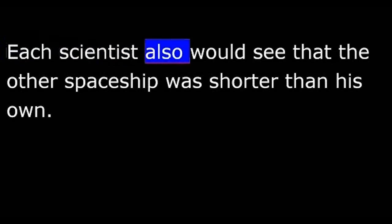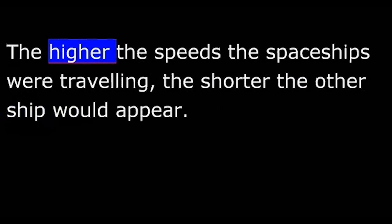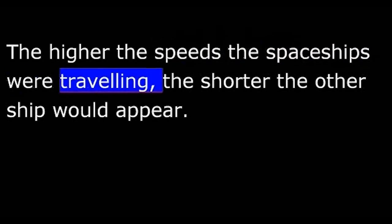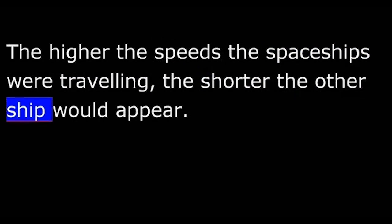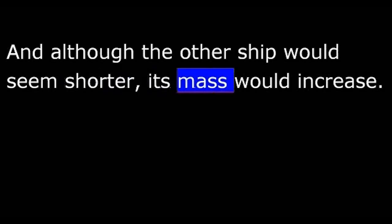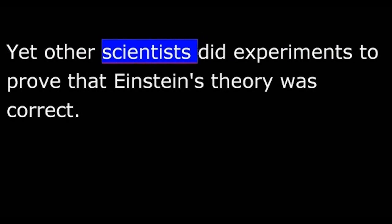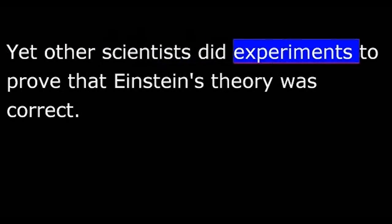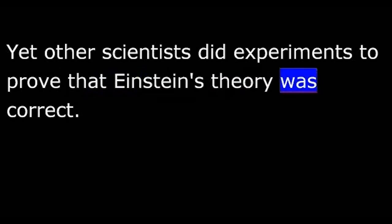Each scientist also would see that the other spaceship was shorter than his own. The higher the speeds the spaceships were traveling, the shorter the other ship would appear. And although the other ship would seem shorter, its mass would increase. It would seem to get heavier. The ideas were difficult to accept. Yet other scientists did experiments to prove that Einstein's theory was correct.